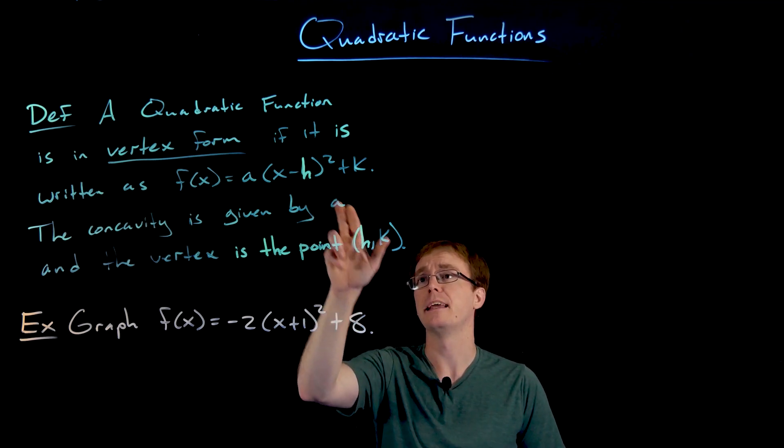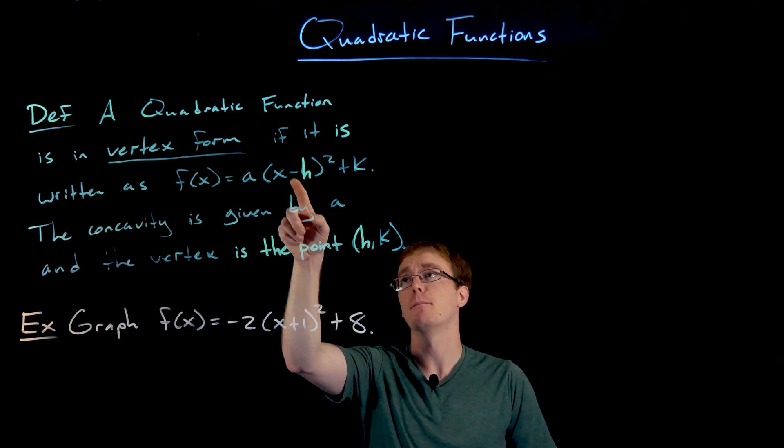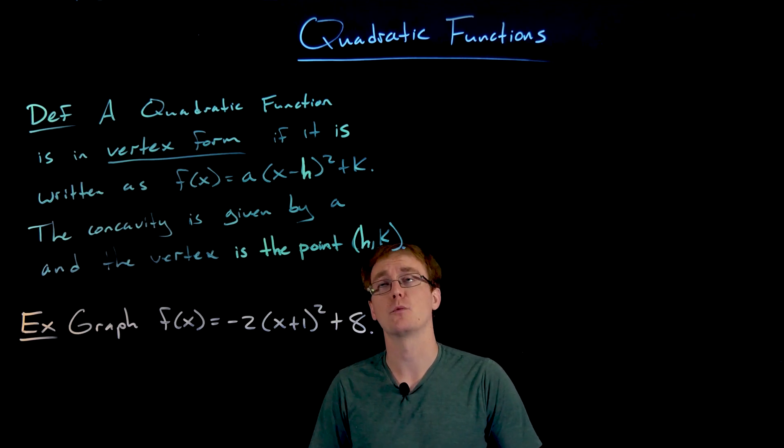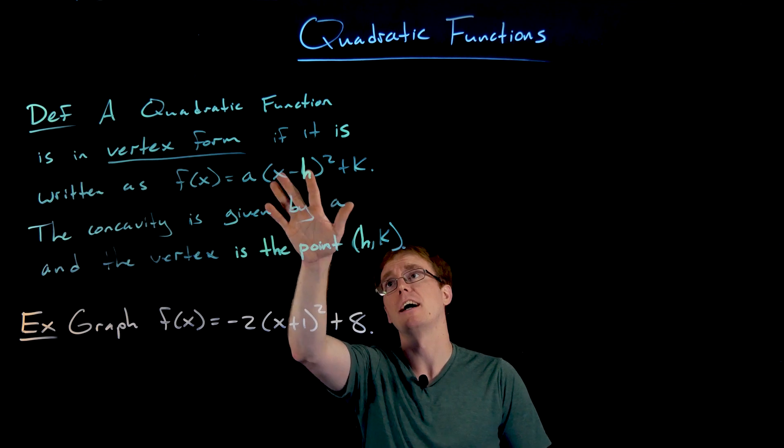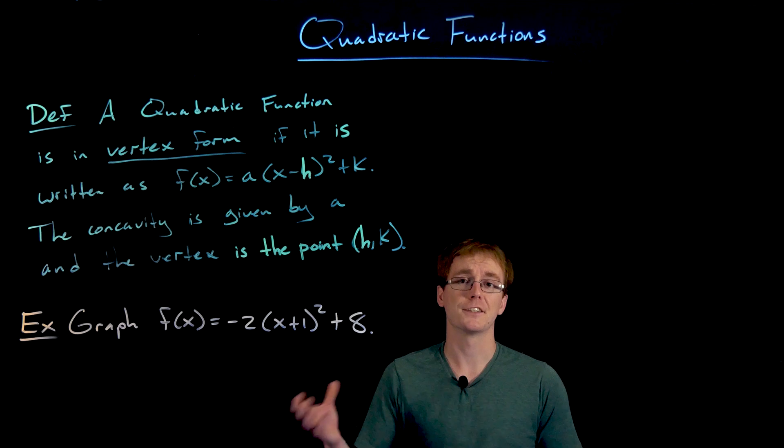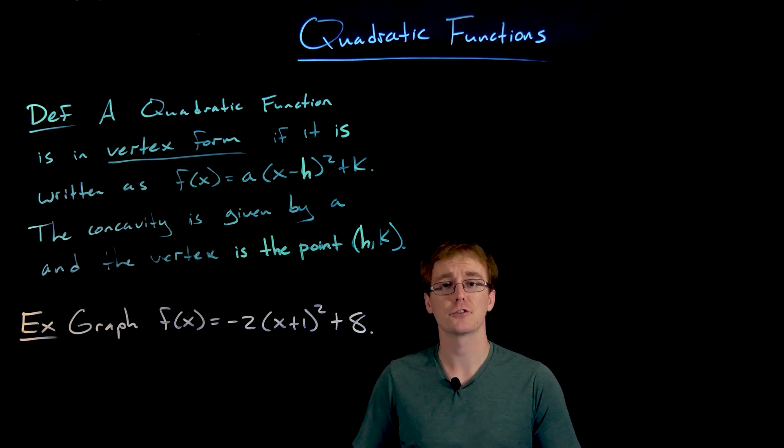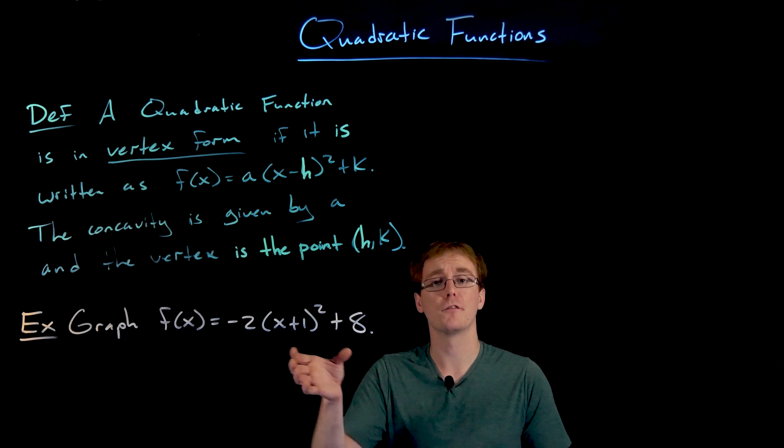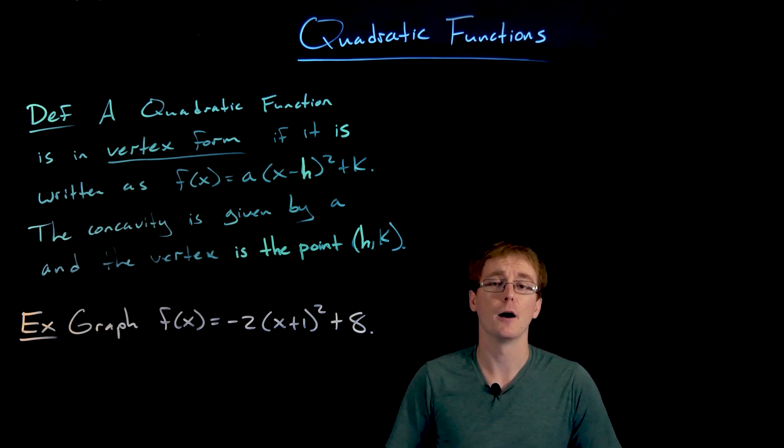The vertex always corresponds to that point (h, k), where h is that number we are subtracting away from x, and k is that constant that we are adding to the outside of our squared quantity. Whether we want to work with a quadratic function in that standard form or in this vertex form is usually going to be up to us. Sometimes they'll just be given in one form or the other.